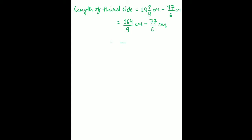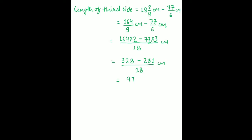Now we have to find the length of the third side. Length of third side equals sum of 3 sides minus sum of 2 sides: 18 whole 2 upon 9 centimeter minus 77 upon 6 centimeter, which is 164 upon 9 minus 77 upon 6 centimeter. LCM of 9 and 6 is 18. So 164 multiplied by 2 minus 77 multiplied by 3, upon 18, giving 328 minus 231 upon 18 centimeter, which equals 97 upon 18 centimeter, that is 5 whole 7 upon 18 centimeter.